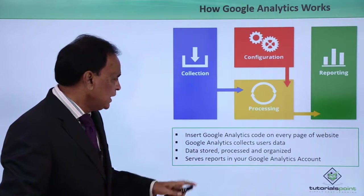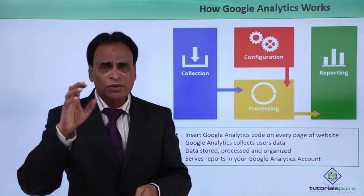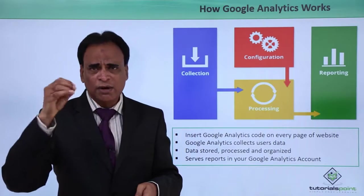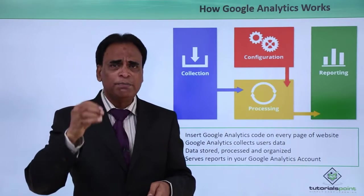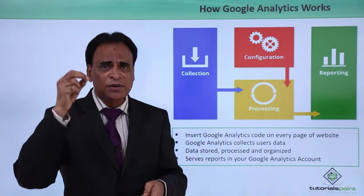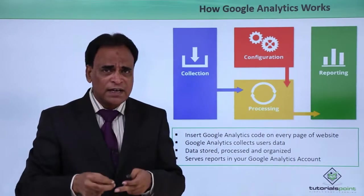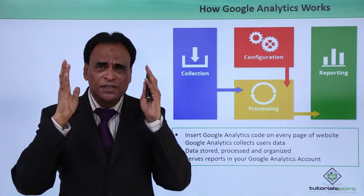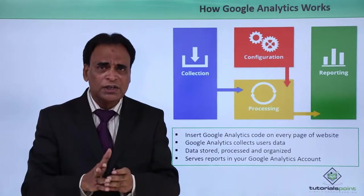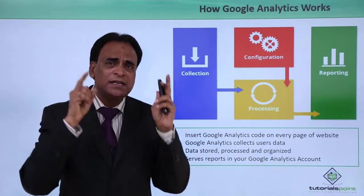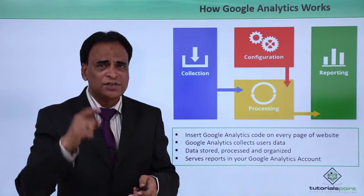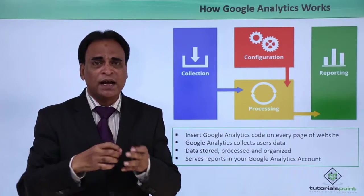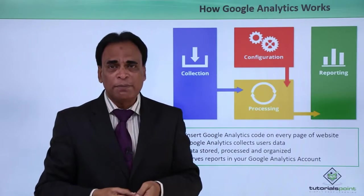How does Google Analytics work? You need to insert the Google Analytics code on every page of your website. Go to analytics.google.com and log in. Google provides a step-by-step process to register your website, including your time zone. After analyzing this information, Google will provide you a unique code — about 6 to 8 lines — which is a unique code generated for your website. Copy that code and paste it in each and every page of your website. That is how Google Analytics integrates with your site and tracks user behavior.